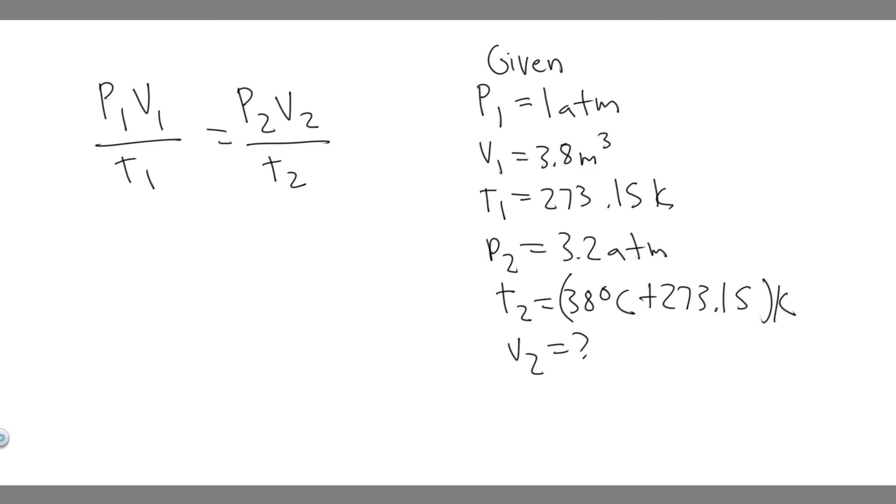And so now we have everything, we just got to solve for V2. So solving for V2, we can multiply both sides by T2, and then just divide by P2. And so what you're going to get is V2 is equal to V1 times P1 over P2, and then multiply by T2 over T1.